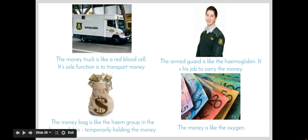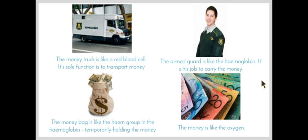Hemoglobin is carried in the red blood cells, and just like the money truck, the sole function of the red blood cell is to carry hemoglobin, which carries oxygen. The armed guard is like the hemoglobin — he sits in the money truck, travels around in it, and his job is to hold on to the money. So the hemoglobin's job is to hold on to the oxygen.